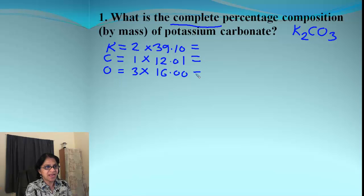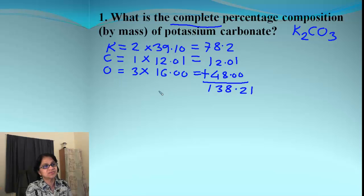When we multiply each one of that, I'm getting 78.2, 12.01 and 48.00. All right. When we add all of those, we get 138.21. And this is what we call as the molar mass.